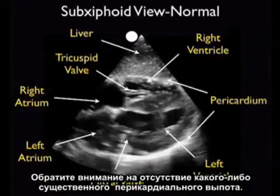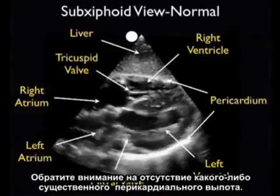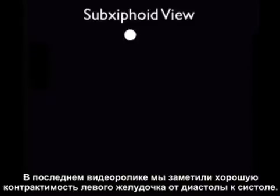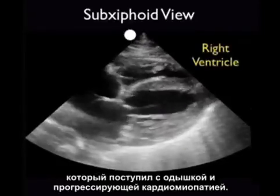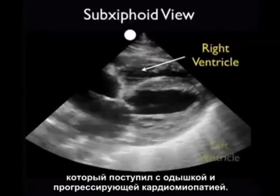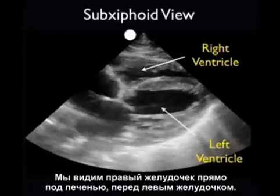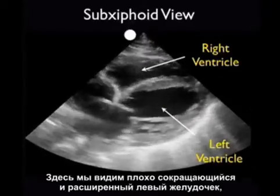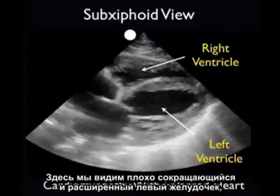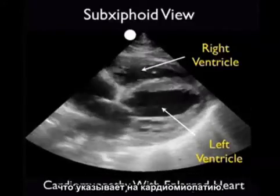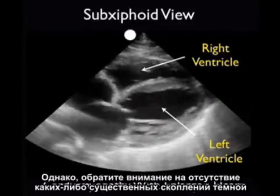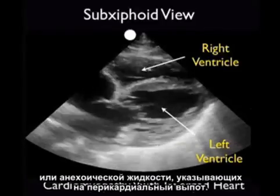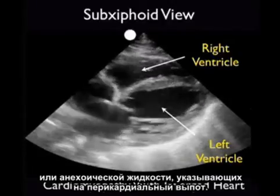Note here the absence of any significant pericardial effusions. In that last video clip, we noted good contractility of the left ventricle from diastole to systole. Let's contrast that clip to this one from a patient who presented with shortness of breath and advanced cardiomyopathy. We see the right ventricle just below the liver, anterior to the left ventricle. What we see here is a poorly contracting and dilated left ventricle, consistent with a cardiomyopathy heart. Note the absence of any significant dark or anechoic fluid collections consistent with a pericardial effusion.